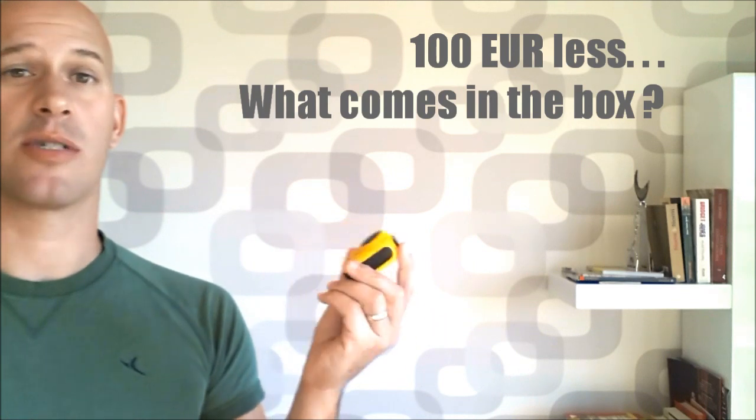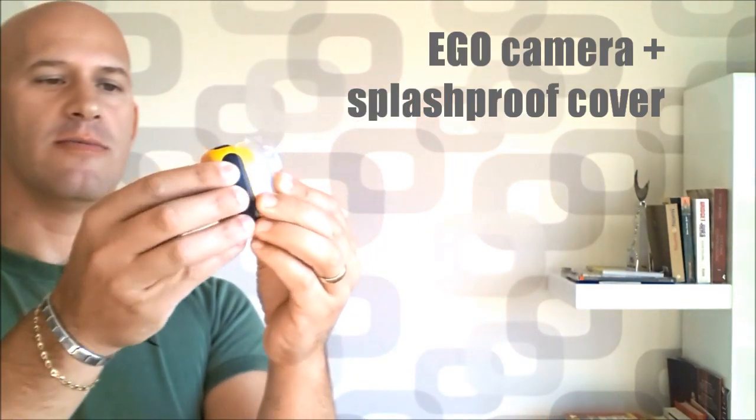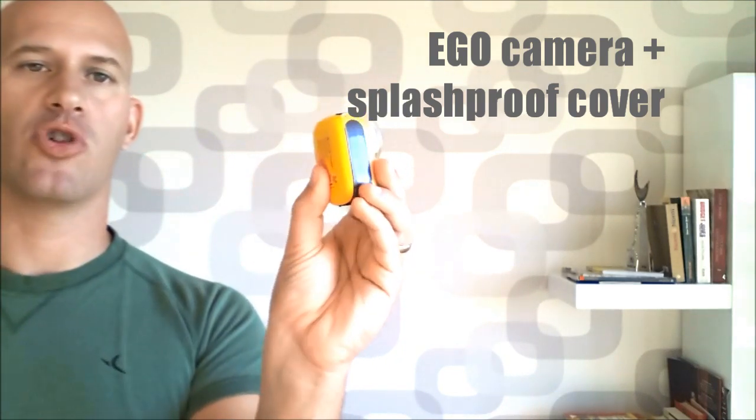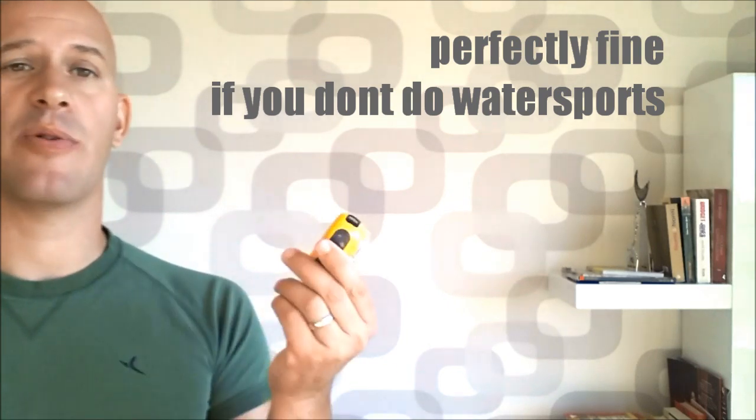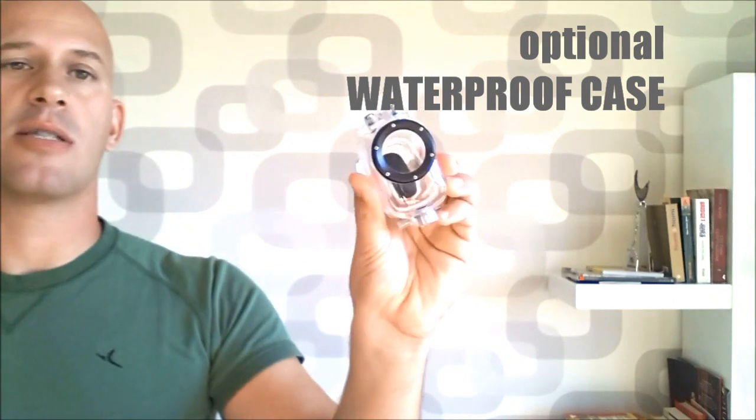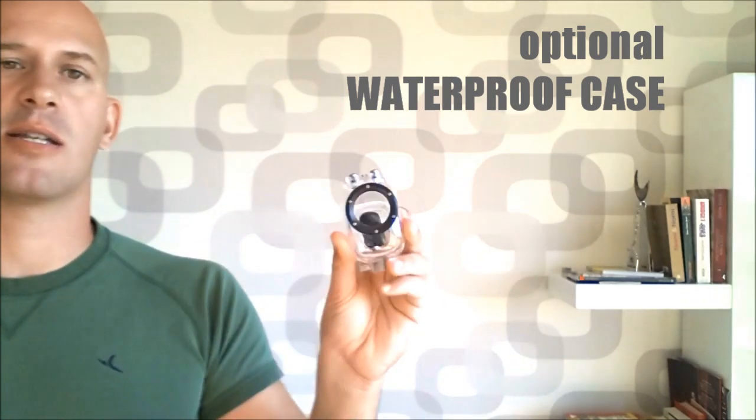At 100 euros less, what comes in the box? Is it the same? No, it's not the same. What you get with this is the camera and the splash proof cover. So you don't have with the Liquid Image Ego in the standard package a waterproof case. This is a small difference compared to the GoPro but if you don't do underwater stuff that's perfectly fine. It's not worth 100 euros. On the other hand if you want to do underwater stuff you can buy the optional waterproof case. So that's no problem. This is 40 euros so you are going to spend 180 versus 250. That's still fine.